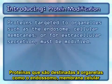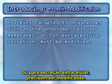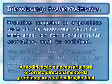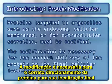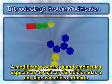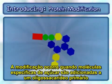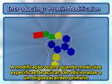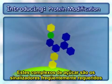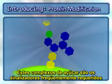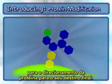Proteins targeted to organelles, such as the endosome, cellular membranes, or for extracellular secretion, must be modified. The modification is necessary for the correct delivery of the protein to its final cellular location. The modification occurs when specific sugar molecules are added to a core oligosaccharide that is attached to the protein. These sugar complexes are the signal often required to direct the protein to its final destination.